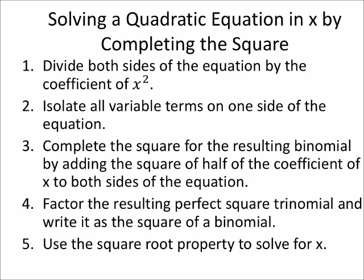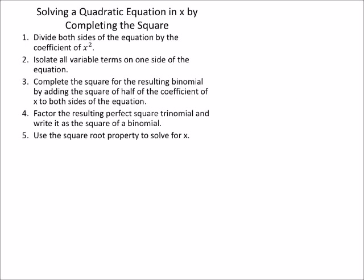But we'll follow the process on this, okay? I'm just going to set up the next problem that we're going to do and then we'll follow this step by step and explain what each of these mean. Because step three right there, complete the square for the resulting binomial by adding the square of half of the coefficient of x to both sides of the equation, that sounds really confusing when we say it out loud like that. But in a problem, hopefully it will make a little bit more sense.